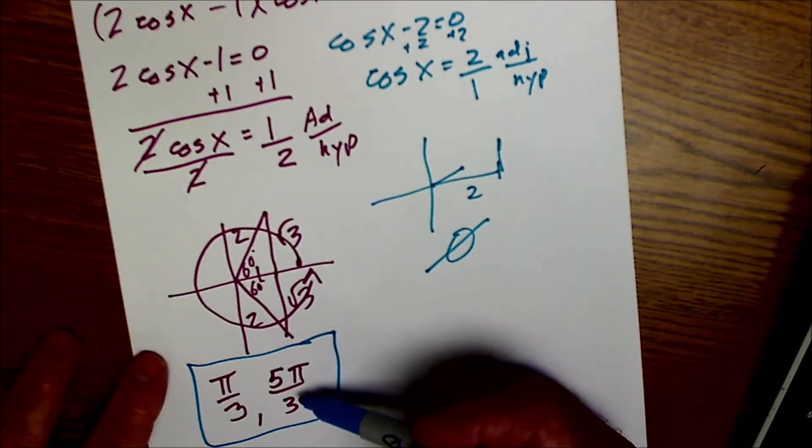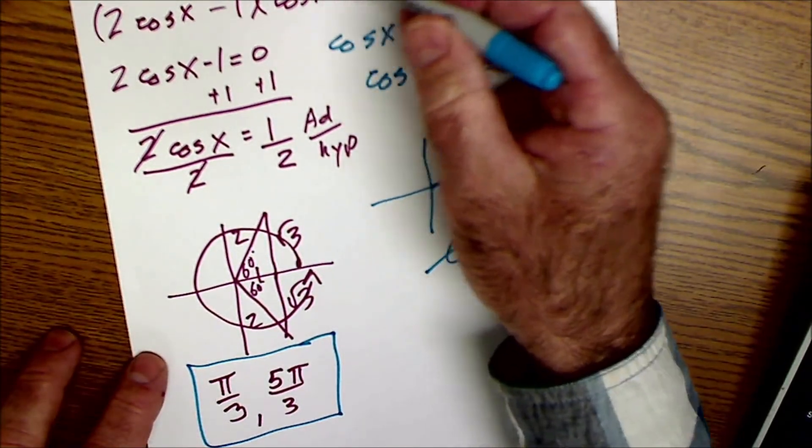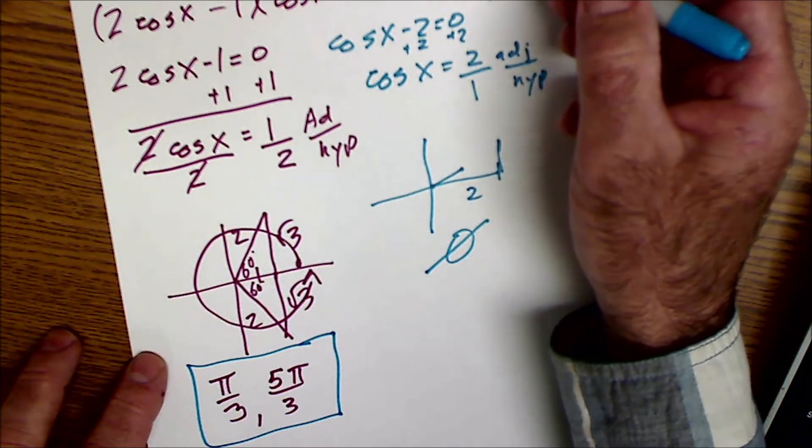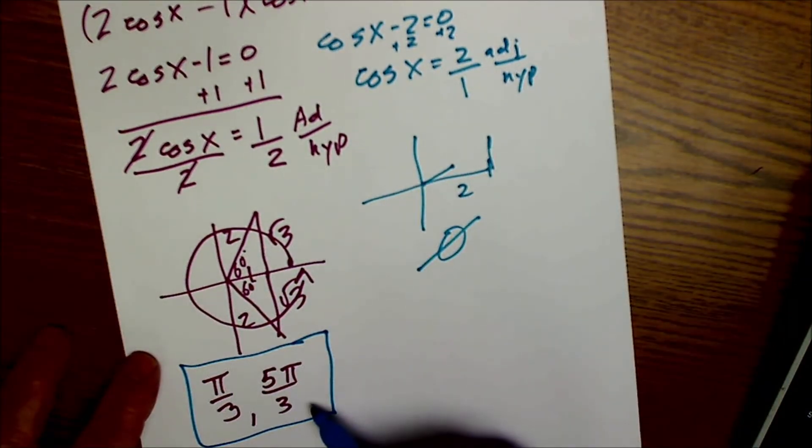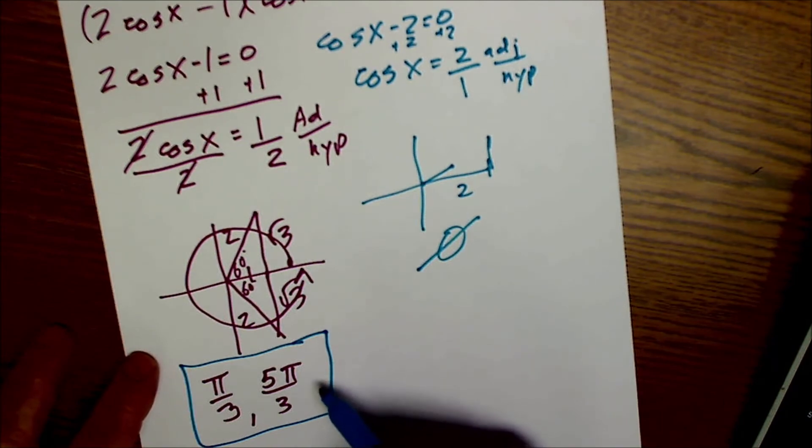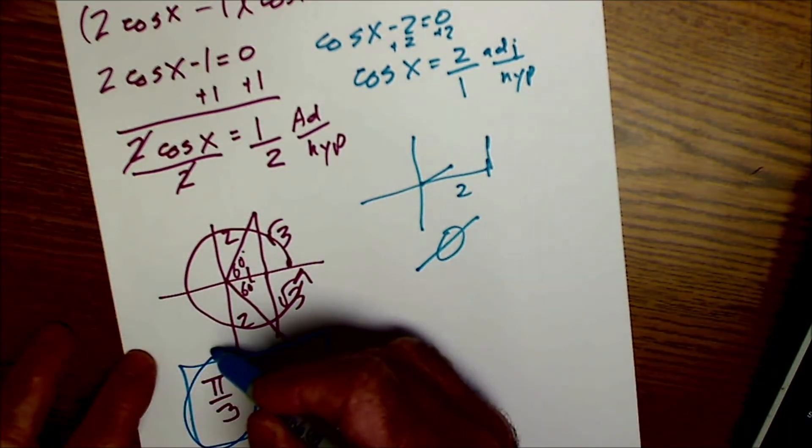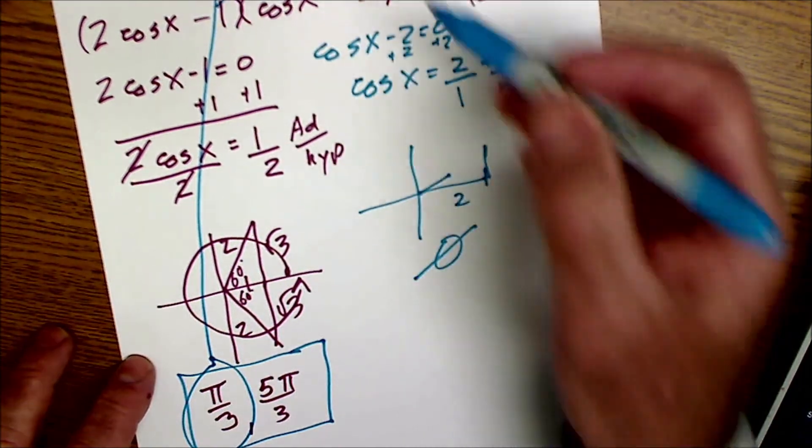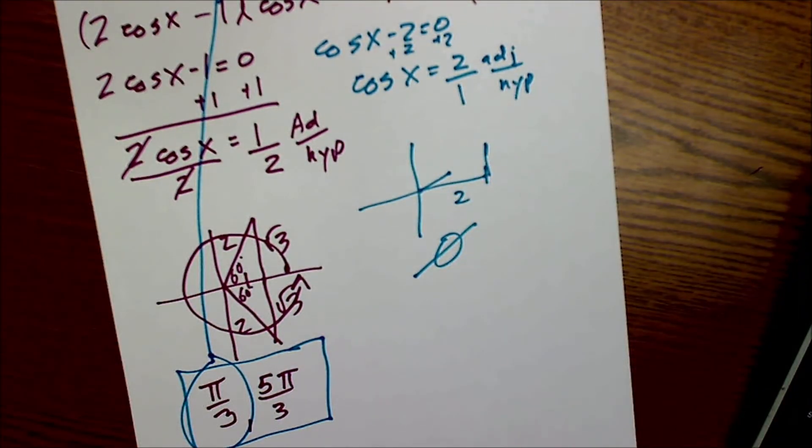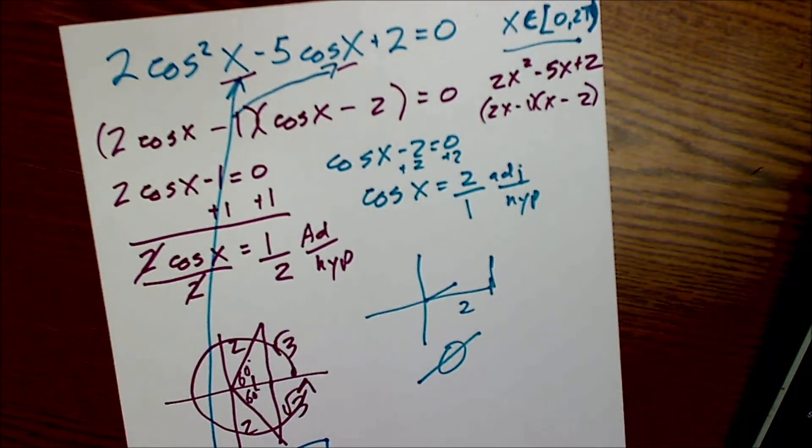So my only answer to this problem right here are the values from this side. So my answer to 2 cosine squared of x minus 5 cosine of x plus 2. In this given domain, x can be pi over 3 or 5 pi over 3. I could take that value and plug it back in here and here and make sure it works. In my calculator, I would have to be in radian mode.